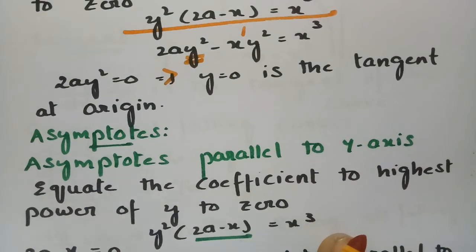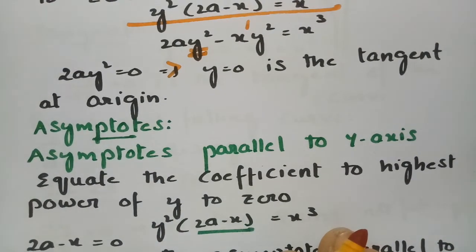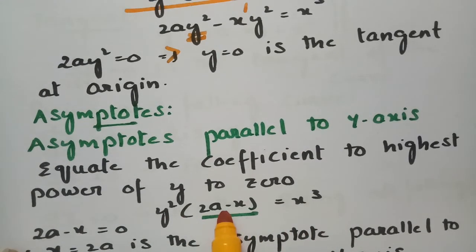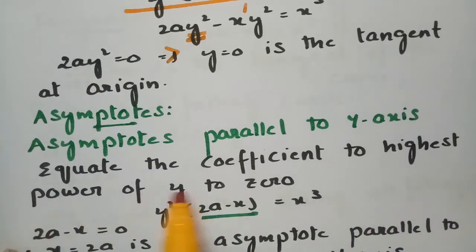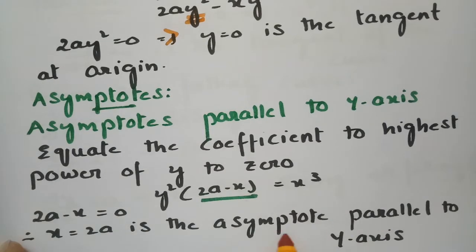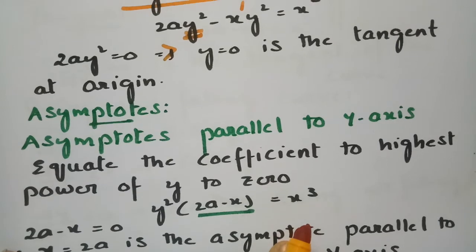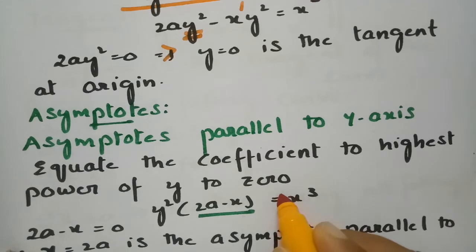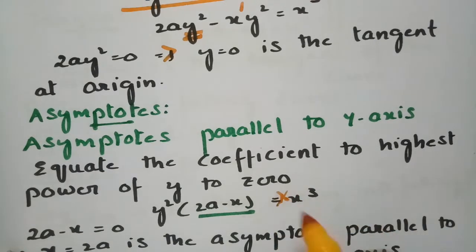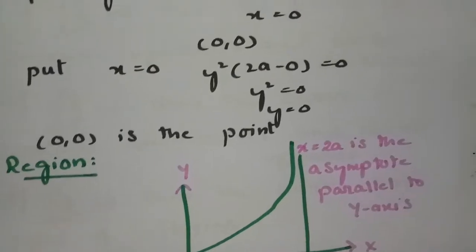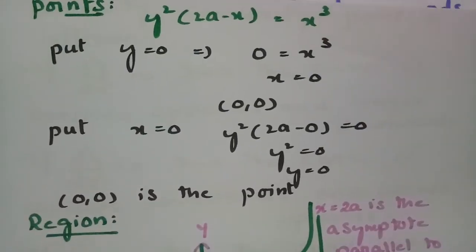Next, asymptotes. To find the asymptote parallel to the y-axis, equate the coefficient of the highest degree term of y to 0: that is 2a − x = 0, giving x = 2a as an asymptote parallel to the y-axis. For the asymptote parallel to the x-axis, the coefficient of the highest degree term of x is a constant, so there are no asymptotes parallel to the x-axis.